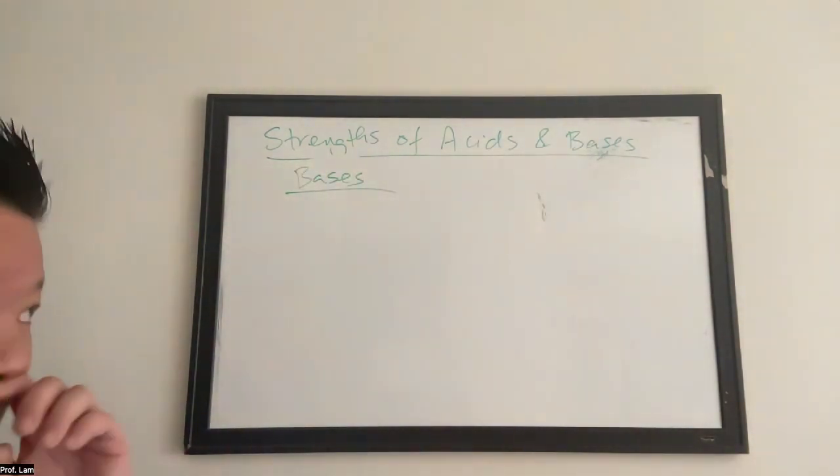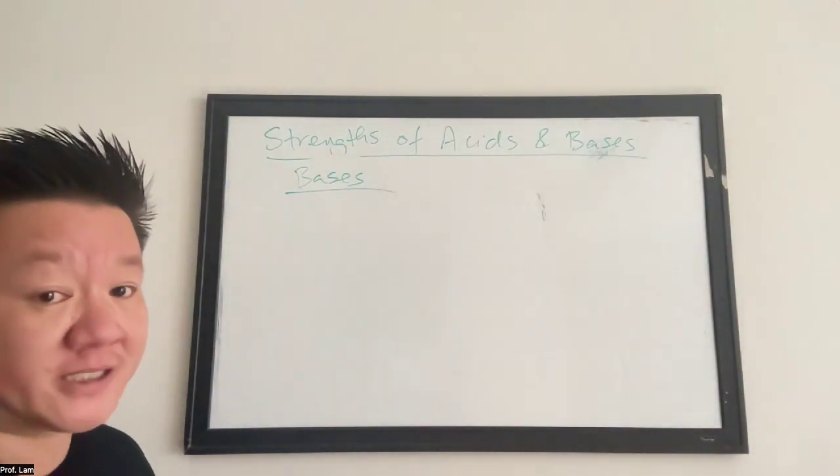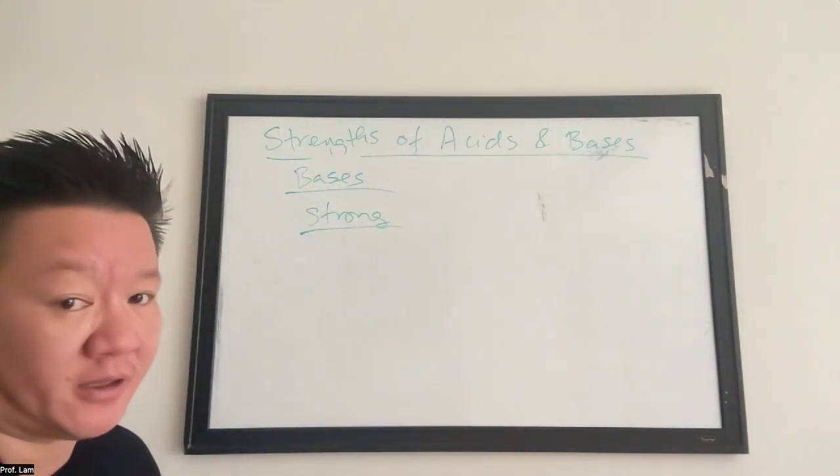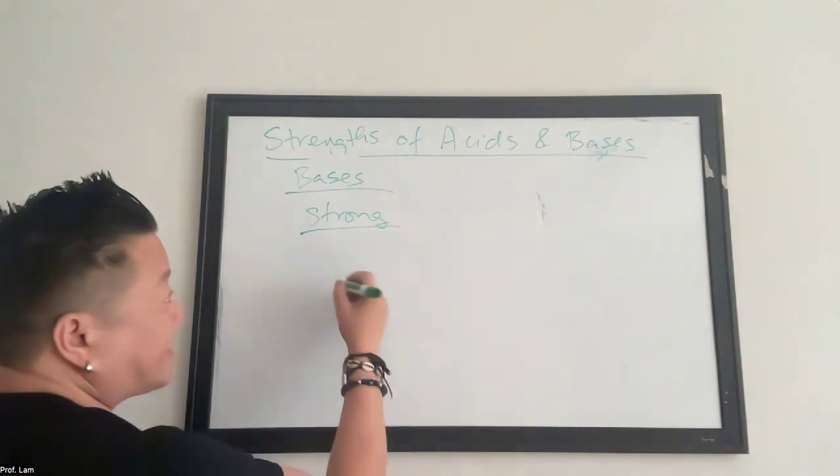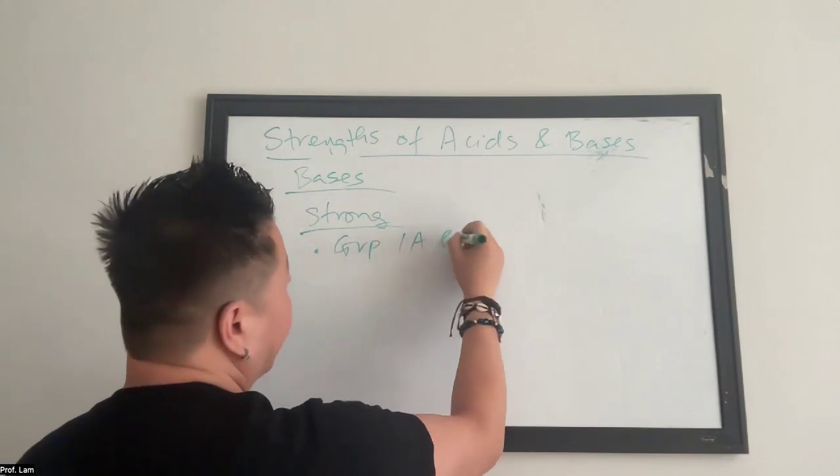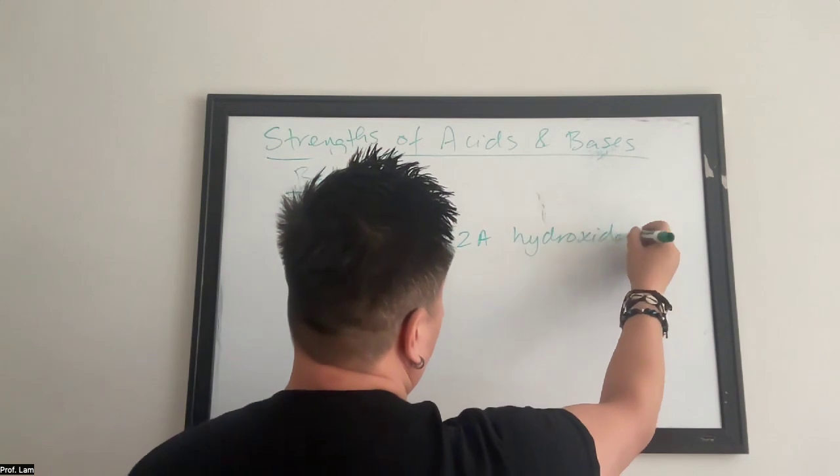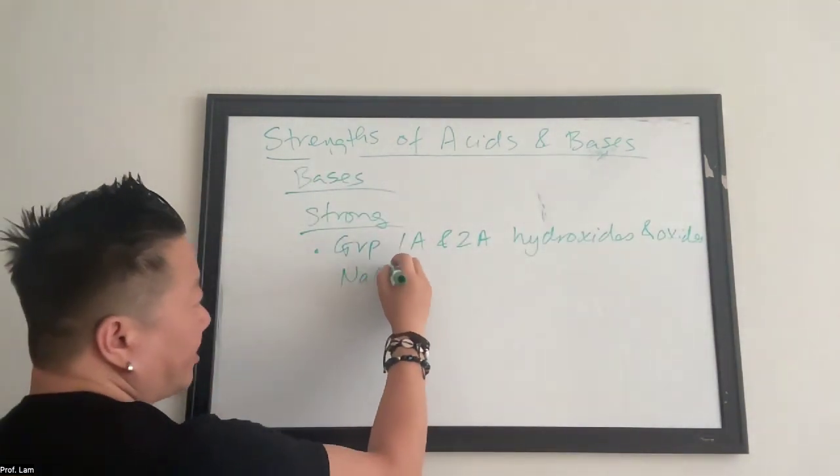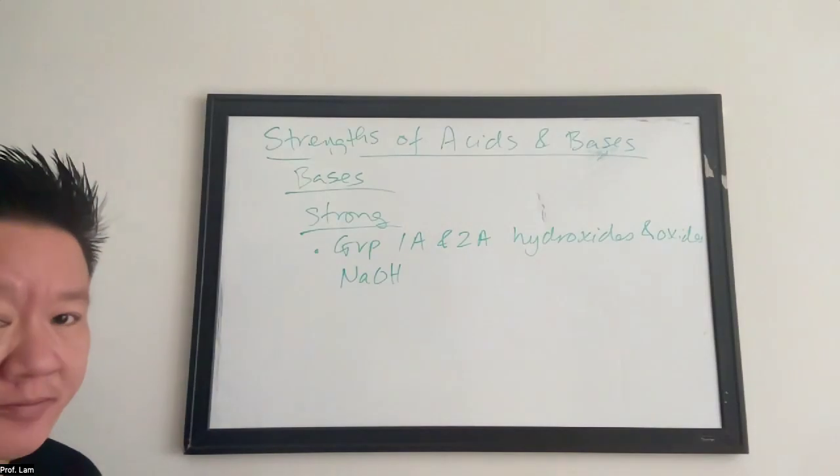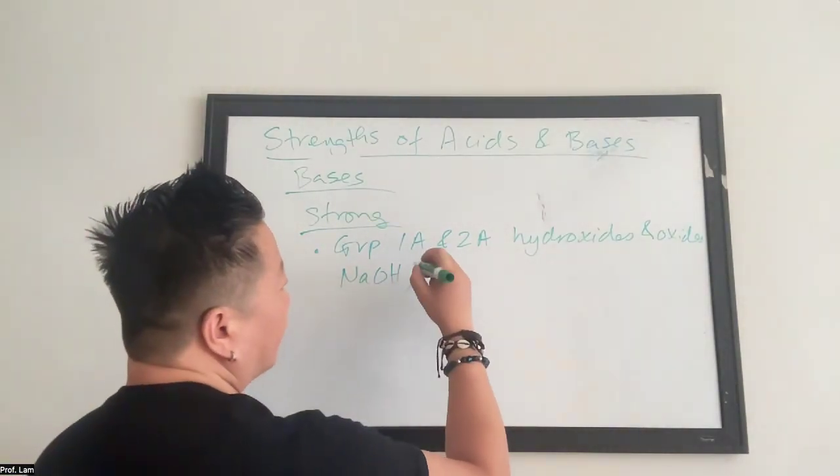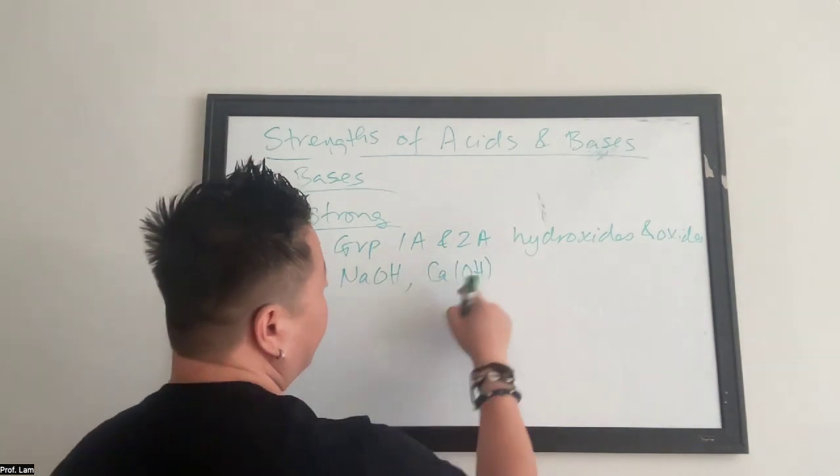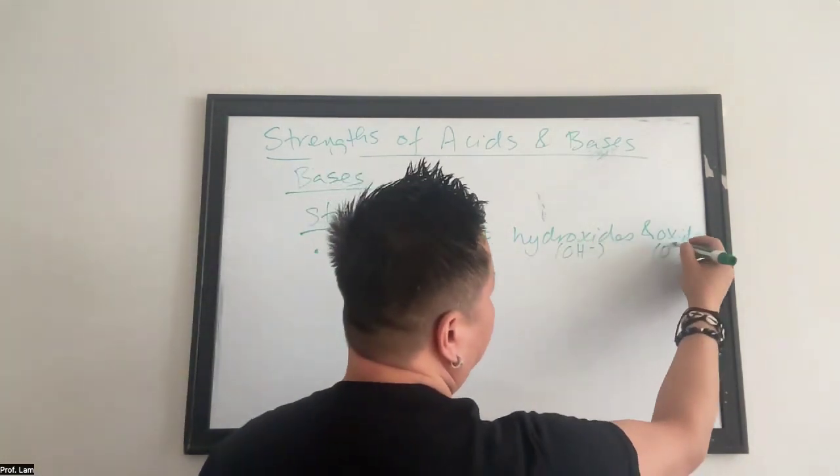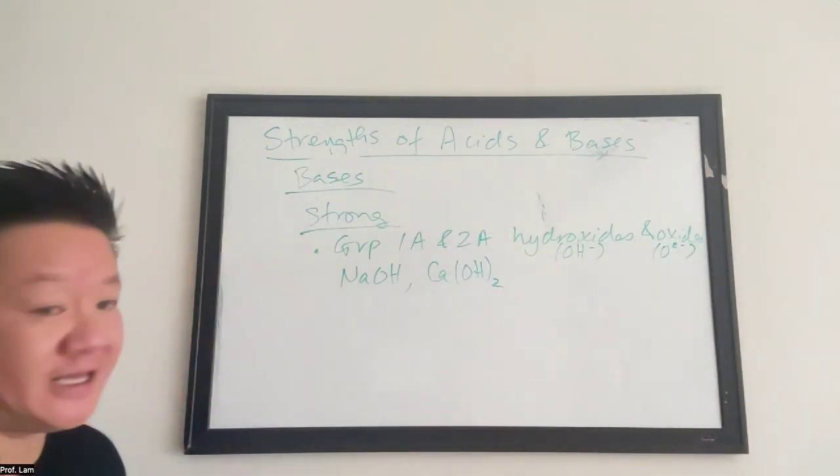So remember how to spot a base. You either have hydroxide in your formula or it's a nitrogen containing compound. So for strong bases, these will always be the non-nitrogen containing. So it's only the hydroxides and it's specific. It's group 1A and 2A hydroxides and oxides as well. So for example, sodium hydroxide. Very common strong base. Sodium hydroxide. Calcium hydroxide. But since calcium is in group 2A, and the hydroxides are OH minus. Oxides are O2 negative. So calcium hydroxide is Ca(OH)2.